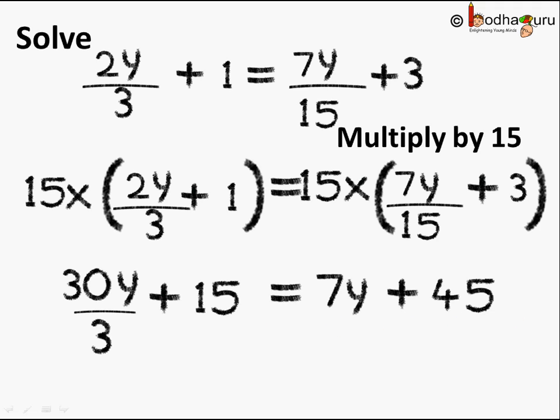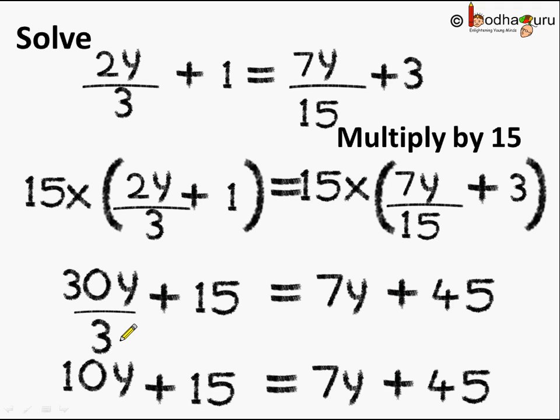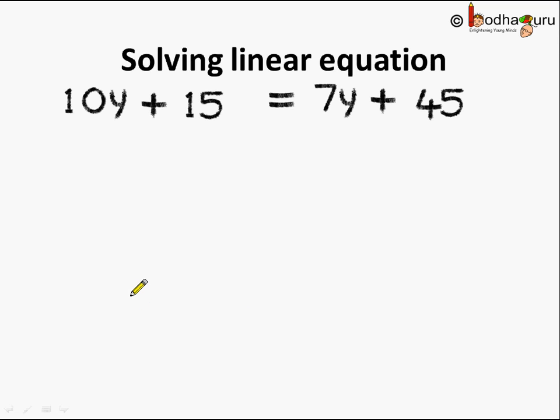We can simplify this further. 10 times 3 is 30. So we get 10y plus 15 is equal to 7y plus 45.